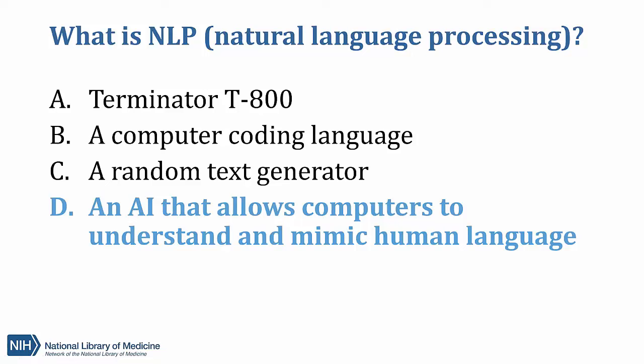If you answered D, that is correct. Natural language processing includes a number of tasks such as understanding human language and producing or generating human language. Depending on the type of NLP, it may be used to understand a language or generate words. LLMs like ChatGPT are also a type of NLP that focus on generating human language. So there are many different specialties and uses for NLP.